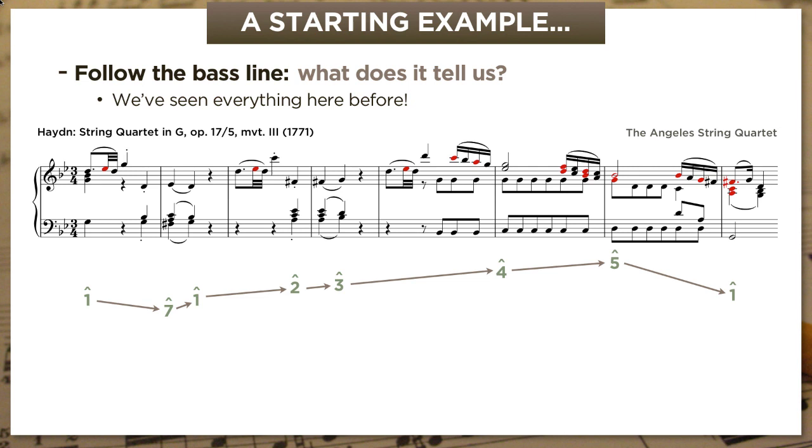Well, I hope you noticed that we've seen everything here before. These are patterns we've seen a million times. And we can make some educated guesses about what kind of harmonic functions this bass line is going to support. That first segment, 1-7-1-2-3, is probably going to support alternating tonics and dominants. And then the second segment, 4-5-1, is probably going to be a standard cadence formula.